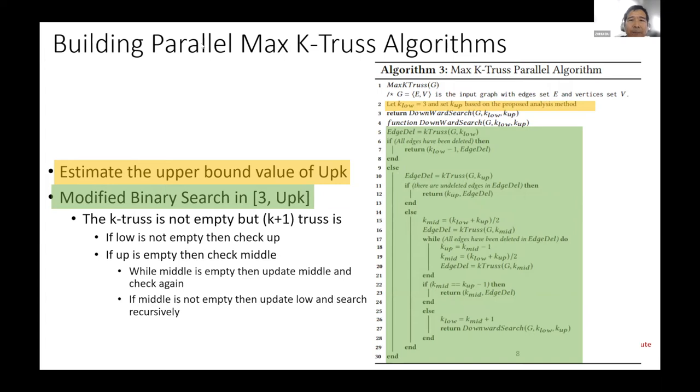And the maximum K-truss algorithm is like this. First, we estimate the upper bound of the value of K. Based on the graph size, total number of vertices, and the degree of each vertex, we can calculate upper K. If we know upper K, we use a modified binary search-based method in the range from three to upper K to search the maximum K-truss.